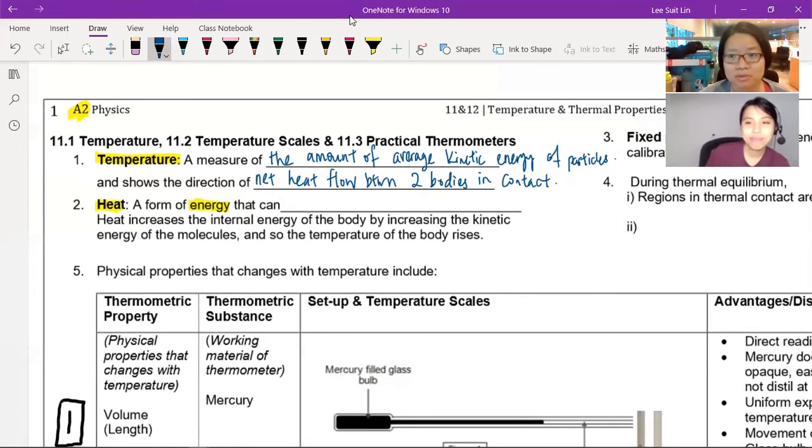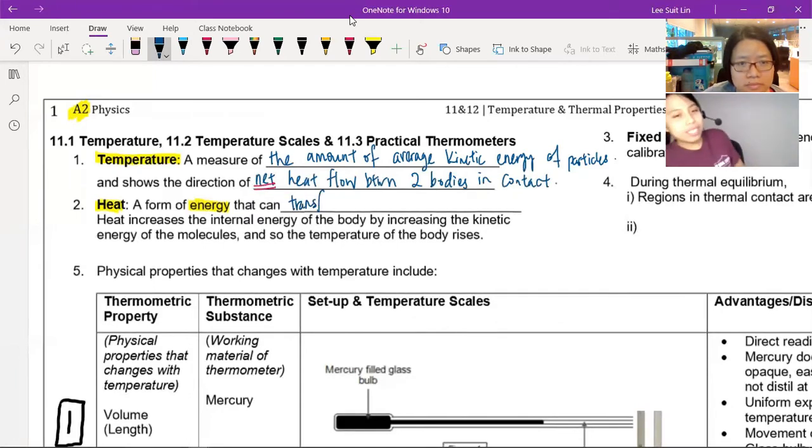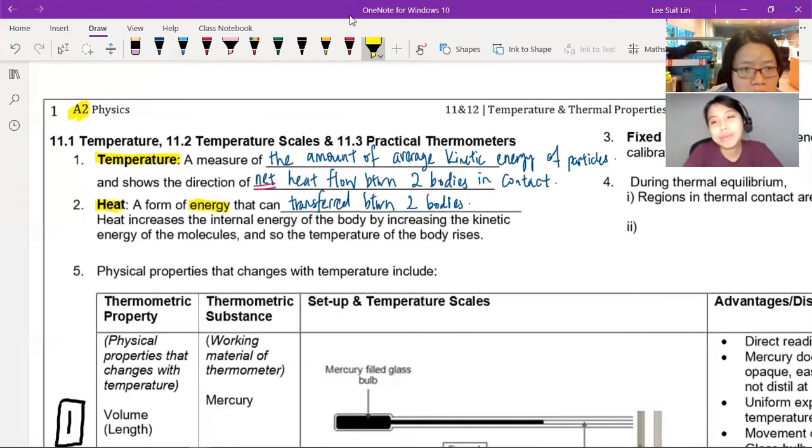Heat is a form of energy. And temperature is a measure of the amount of kinetic energy. So they are related, somewhat related, but they are not the same thing. They are not identical. So you have to differentiate temperature and heat. Don't use English dictionary to find the definition of temperature.